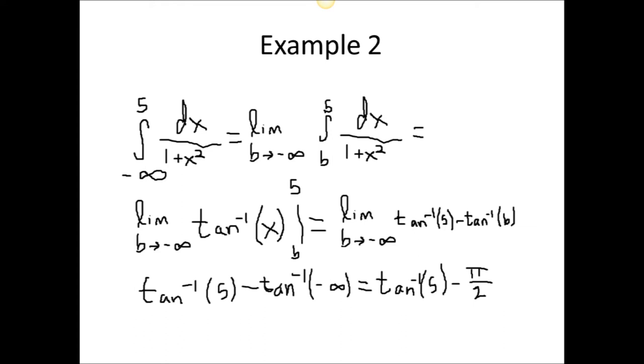Example 2. The only point that is included in the bounds of this integral is negative infinity. So, we must set the limit as b approaches negative infinity, from b to 5, of the integral of dx over the quantity 1 plus x squared. We know using our identities that the integral of dx over the quantity 1 plus x squared is equal to tangent inverse of x plus c. We perform this integration and plug in our bounds. We know that tangent goes to negative infinity when we plug in pi over 2. We use this information to solve for the limit and we get tangent inverse of 5 minus pi over 2.